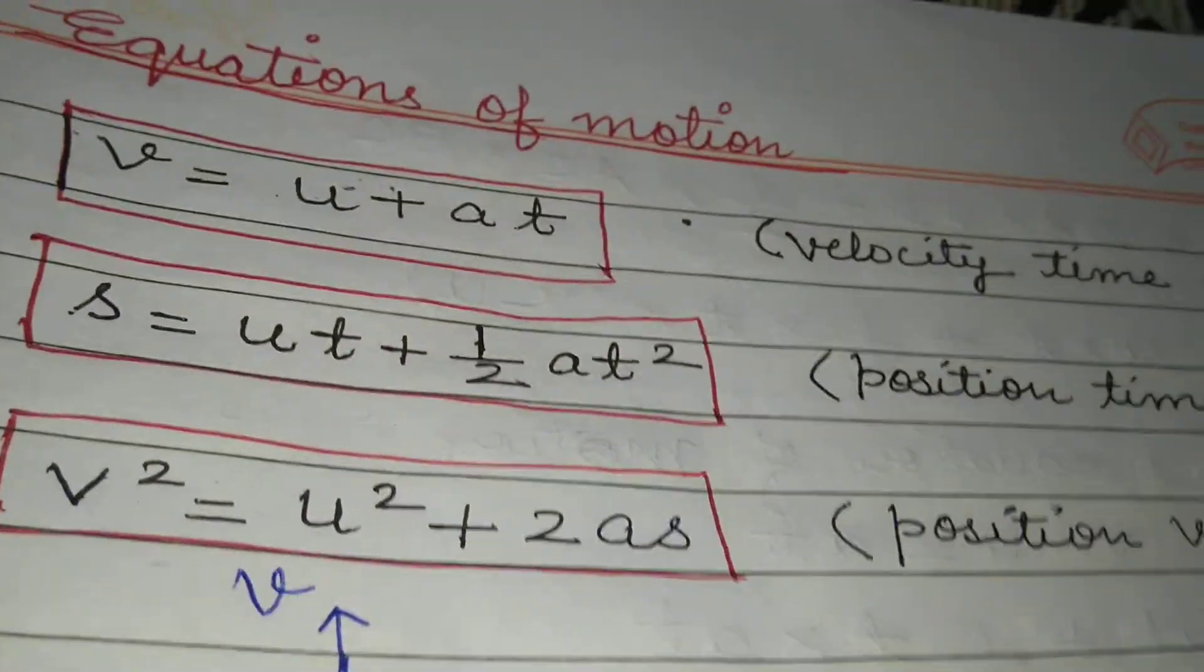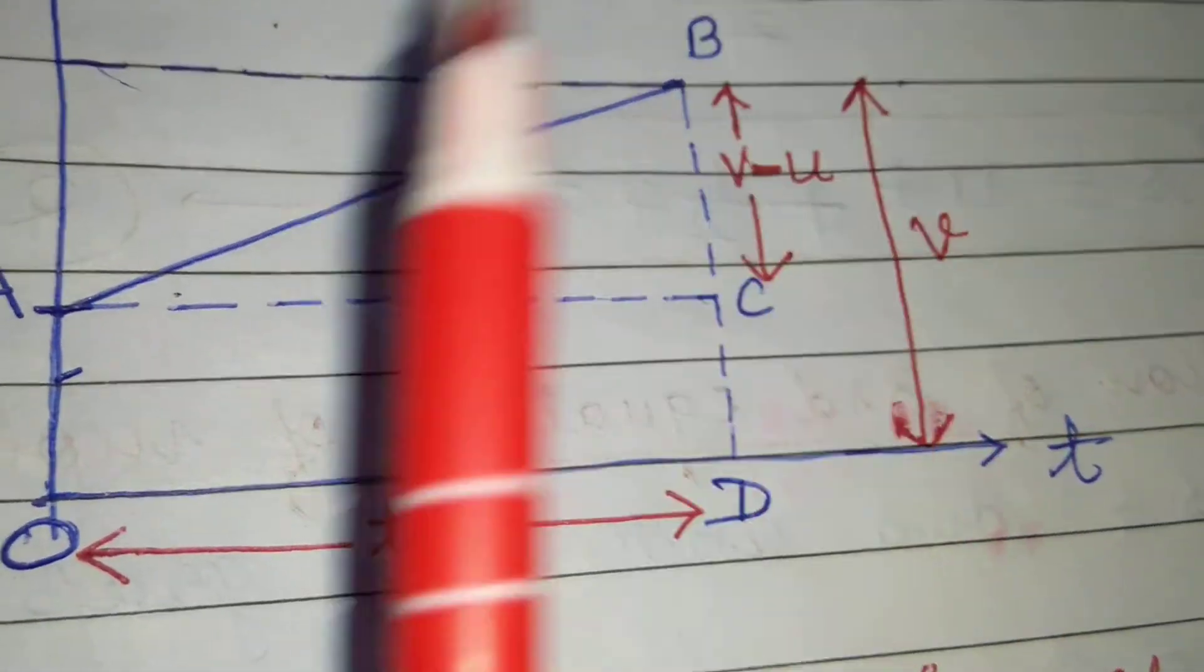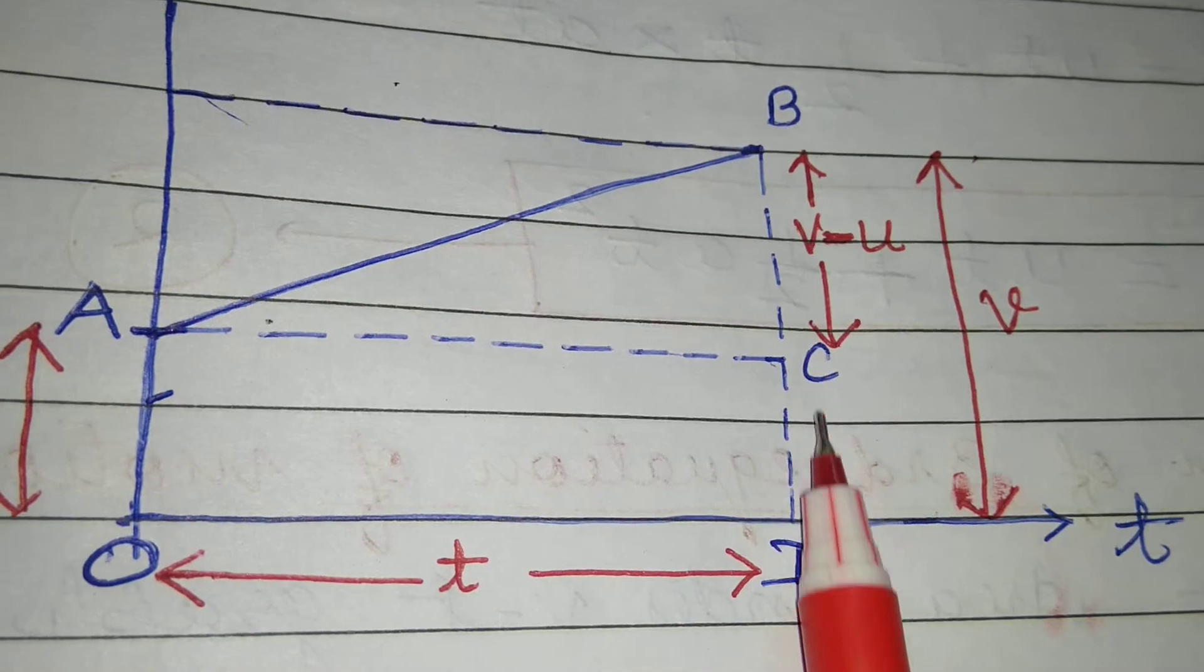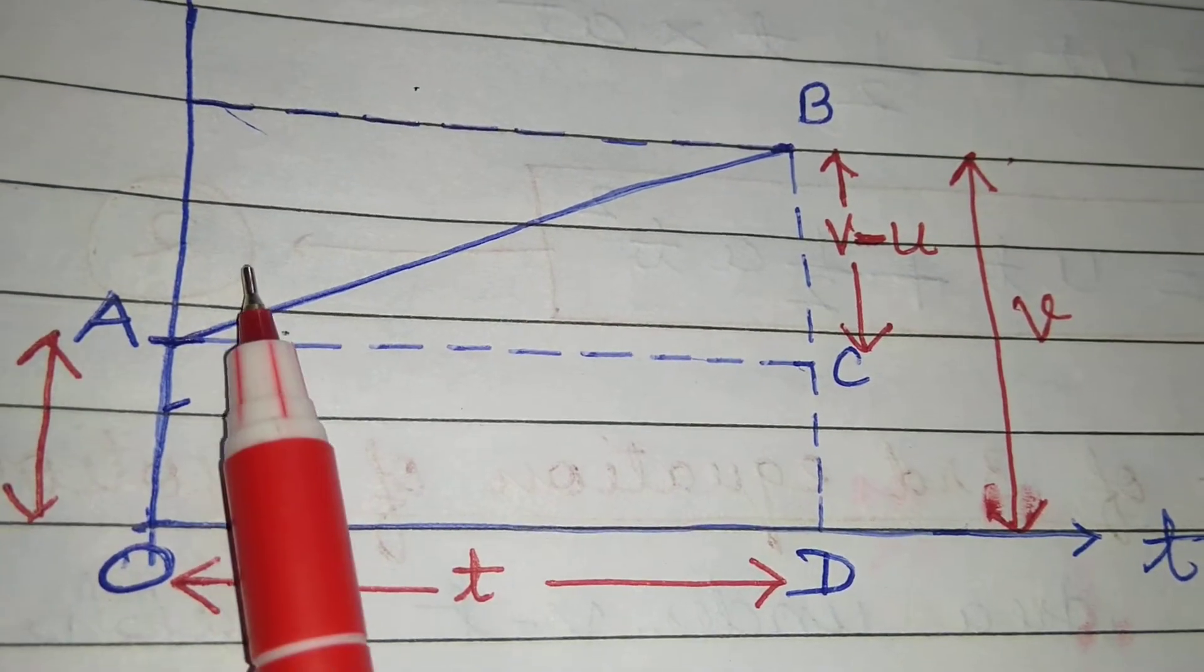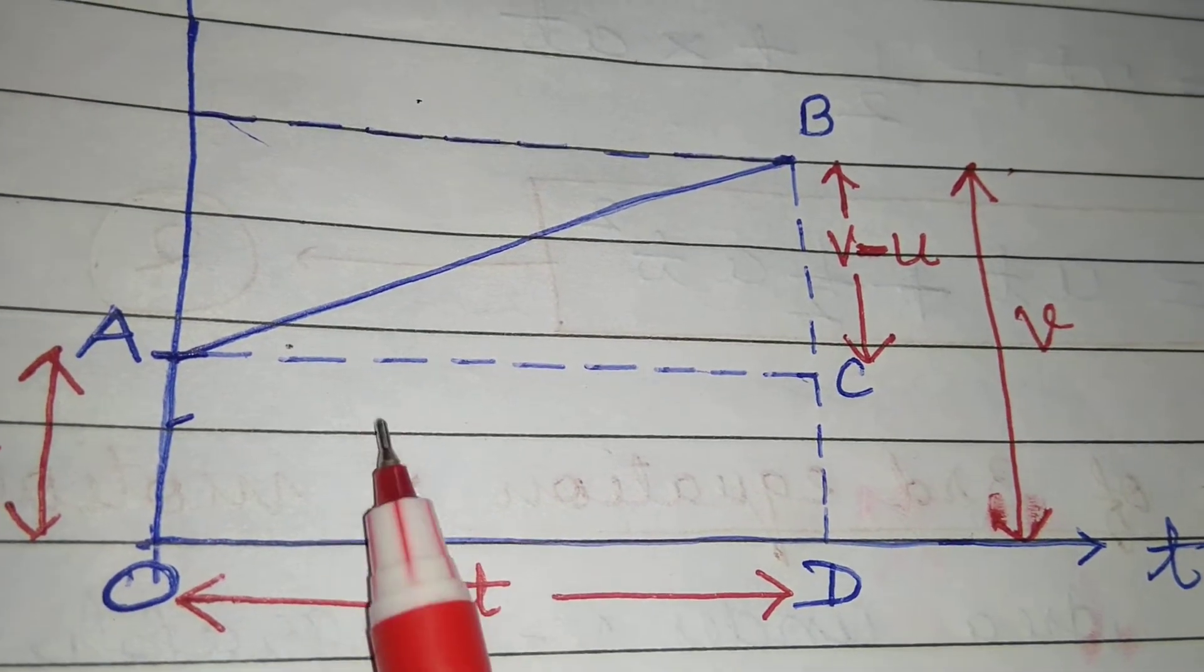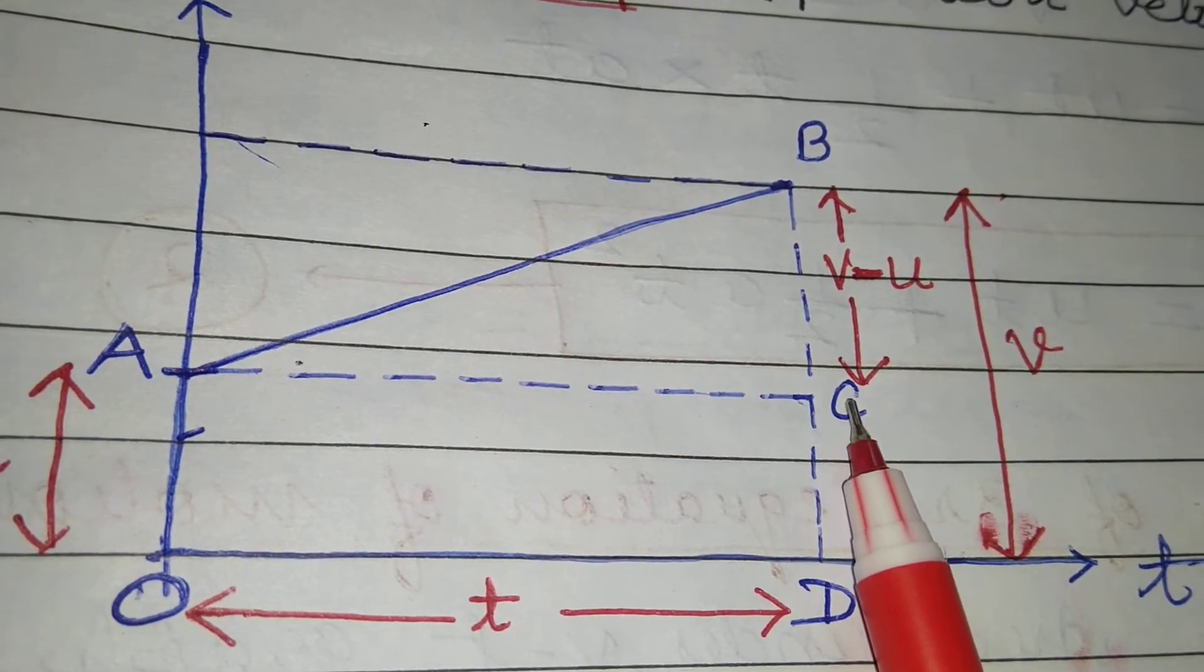We will first draw a perpendicular from this point B, and then we will make a line parallel to the x-axis from this point, and they will meet at C.